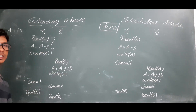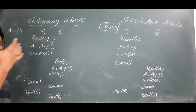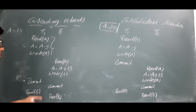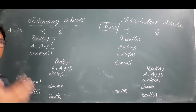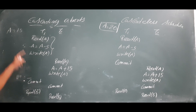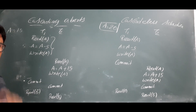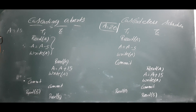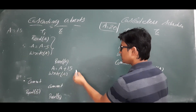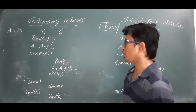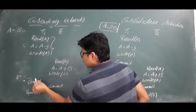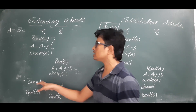Now transaction two performs read A. What value will it read? It will read 15. Why? Because whatever element you want to read, if it is in the cache memory you will not go to the database — only if it is not in cache will you go to main memory. So this is a cache hit; it reads directly from cache as 15. Then A = A + 15, so 15 + 15 = 30. Transaction two writes A as 30.